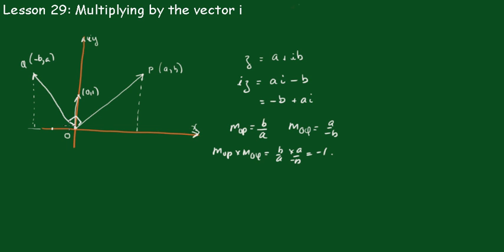And also, they would have to be of the same length, because this one here is a, and that one is b. And this one here is a, and that one is b. Therefore this hypotenuse must be of the same length.